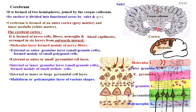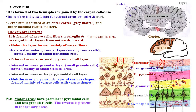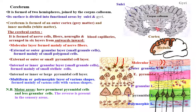Motor areas have prominent pyramidal cells and fewer granular cells. The reverse occurs in sensory areas, where they have prominent granular cells and fewer pyramidal cells.